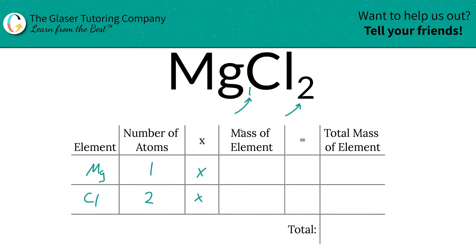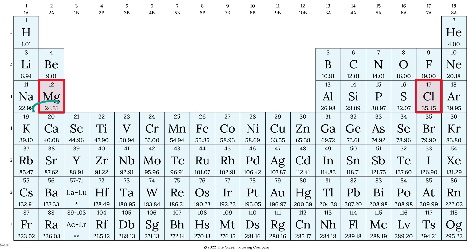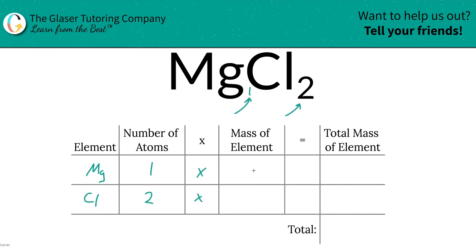Then we're going to multiply each of those number of atoms by the mass of the particular element. That's where the periodic table comes into play. Mass of magnesium is 24.31, chlorine is 35.45, and that's what we're going to write in.